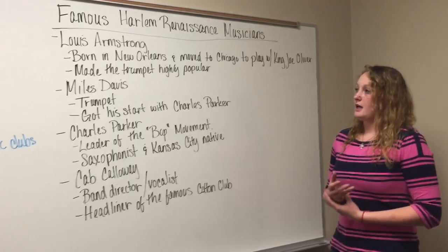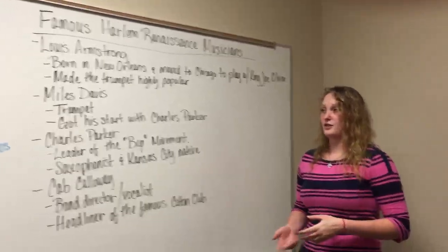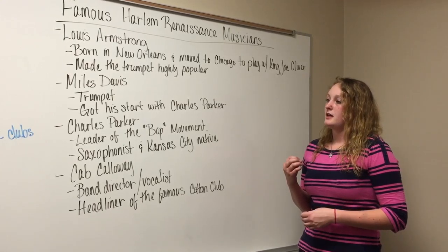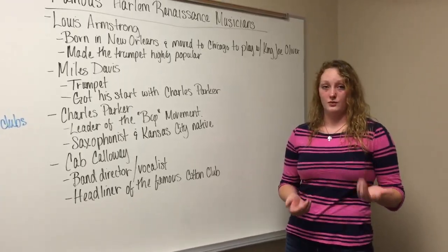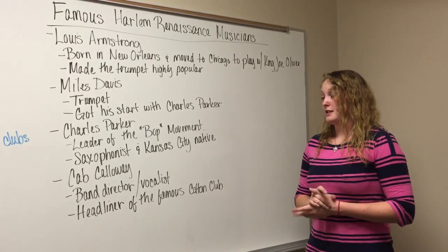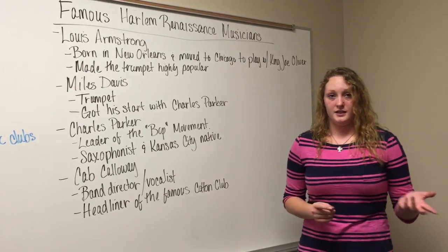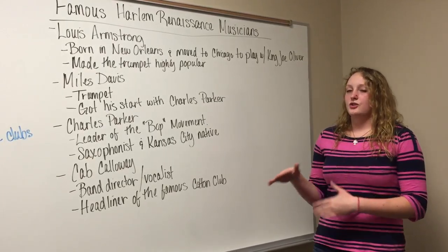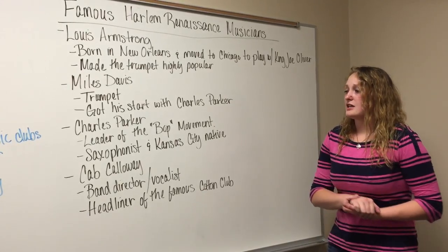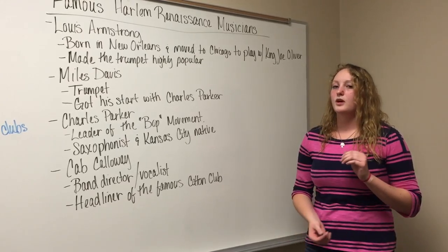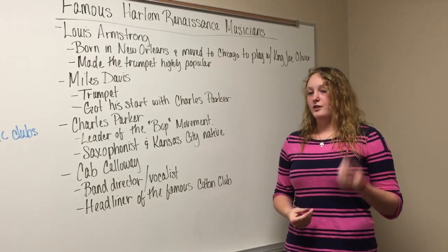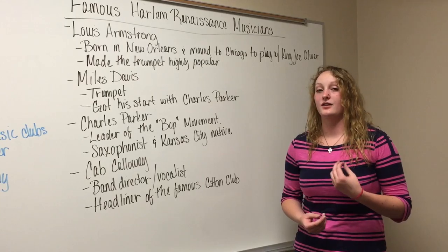Another musician was Miles Davis, also a trumpeter, who got his start with Charles Parker. Charles Parker was a famous saxophonist from Kansas City, Missouri — which I found pretty interesting. He was the leader of the bop music movement, a different style of jazz. There is bop and then cool jazz, which describes the way the jazz sounded and flowed. The last person I'll talk about is Cab Calloway, who was a band director and vocalist and one of the big headliners that people went to see at the Cotton Club.